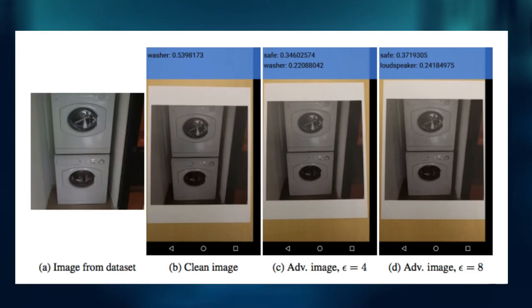Adversarial examples can be worked out with normal paper on their images, can be taken with standard resolution smartphone, and still cause a classifier. In this case, label the washer as a safe.